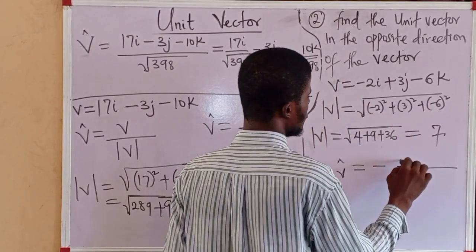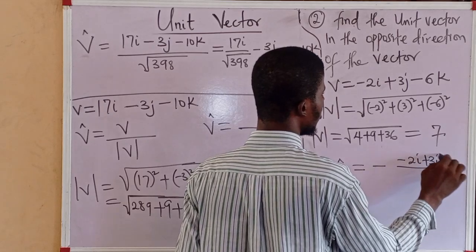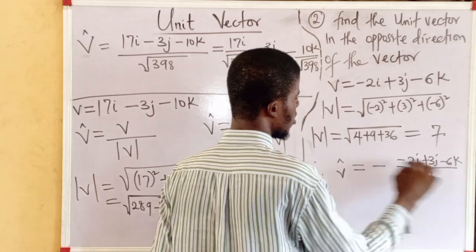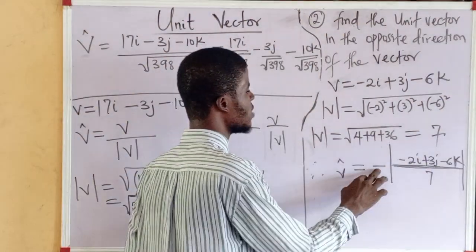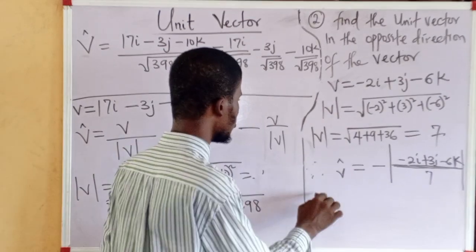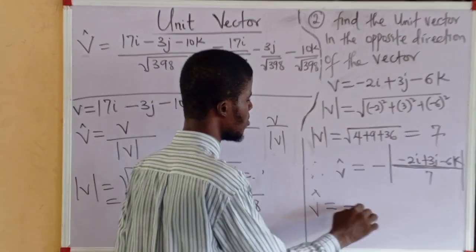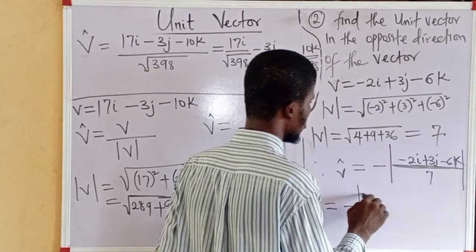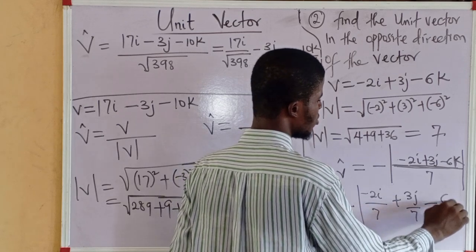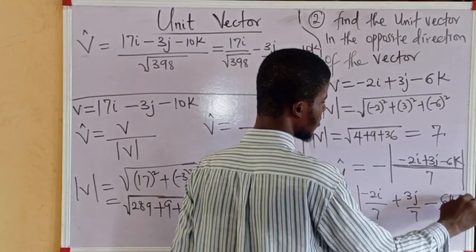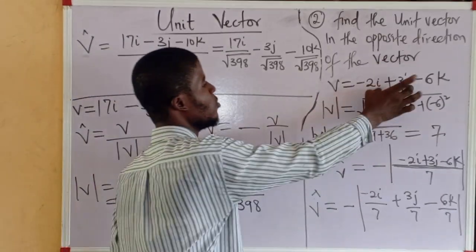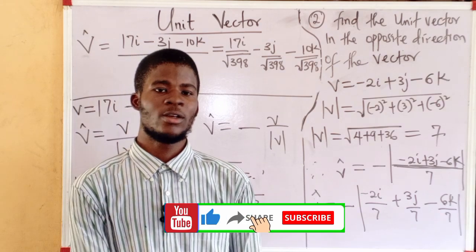So the modulus of the vector is 7. The unit vector in the opposite direction equals minus V over 7, where V equals minus 2i plus 3j minus 6k. Distributing the negative sign across each component gives: minus 2i over 7, plus 3j over 7, minus 6k over 7. This is the unit vector in the opposite direction to the given vector.